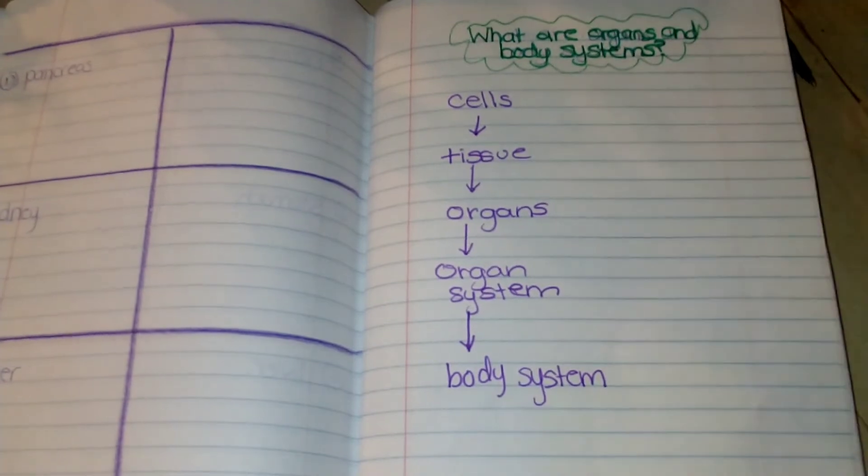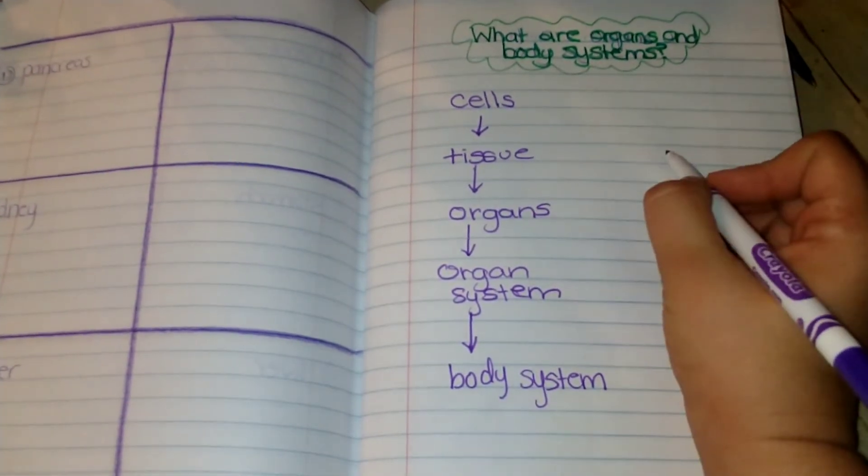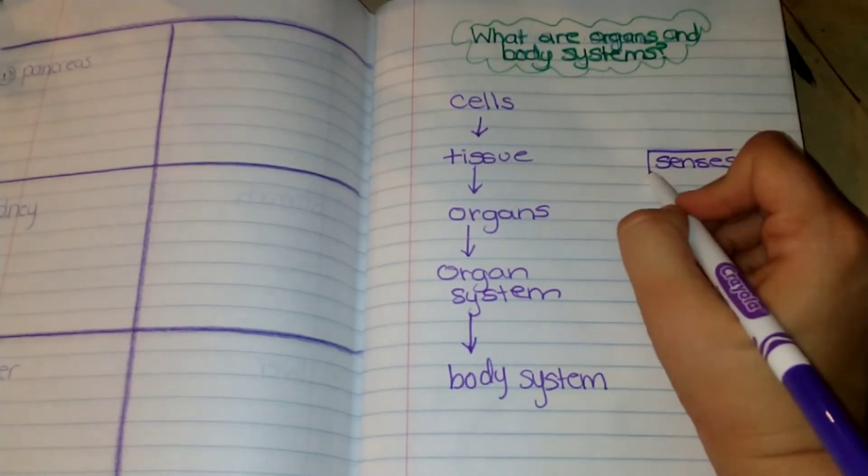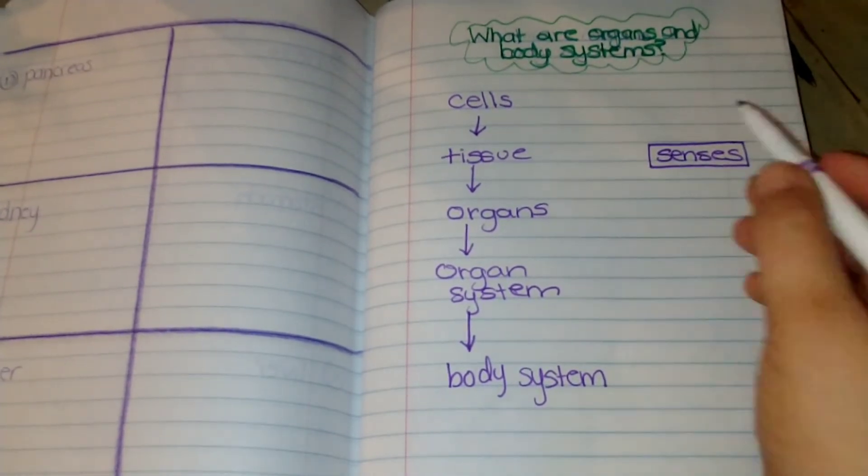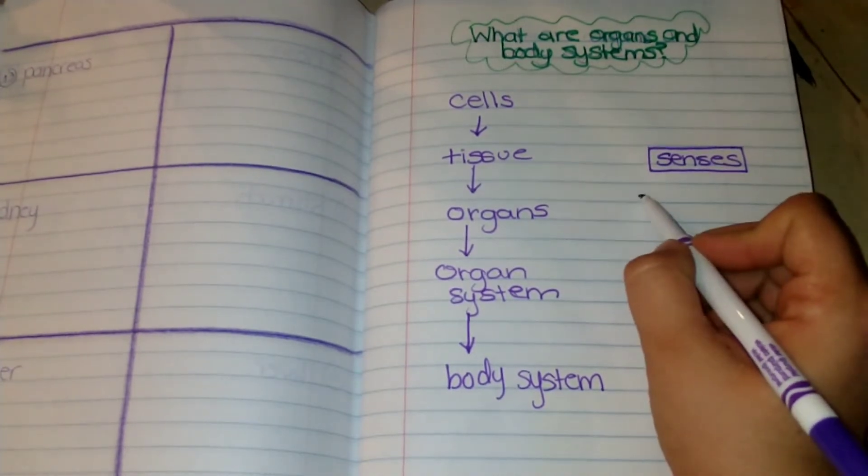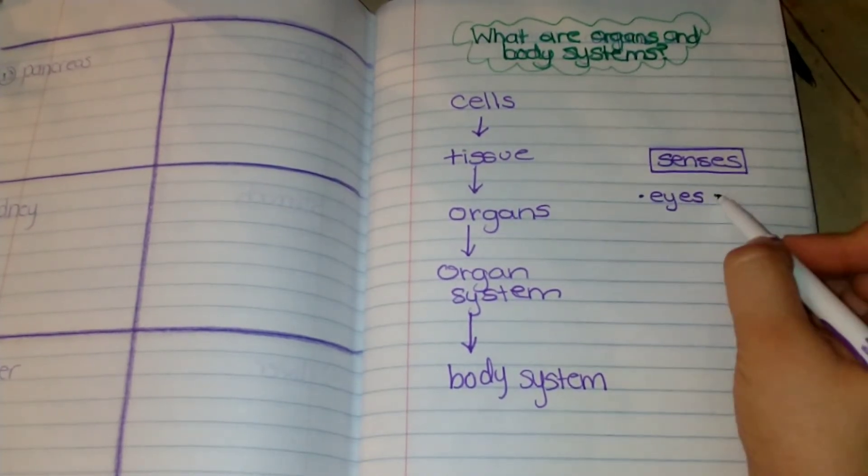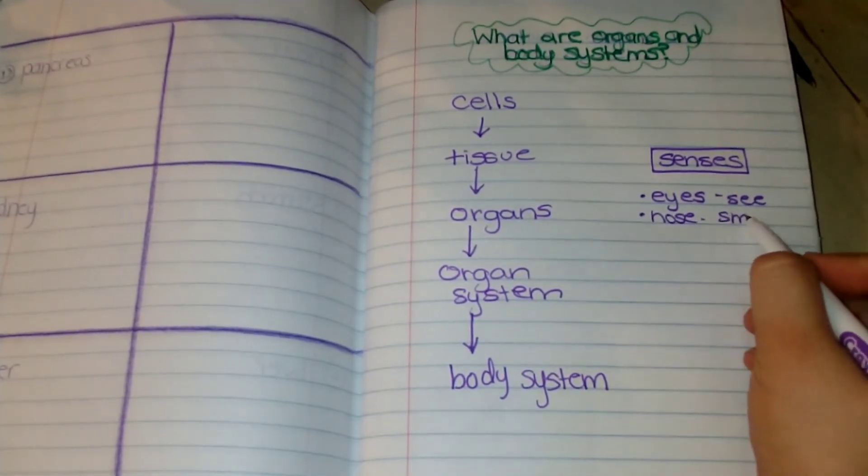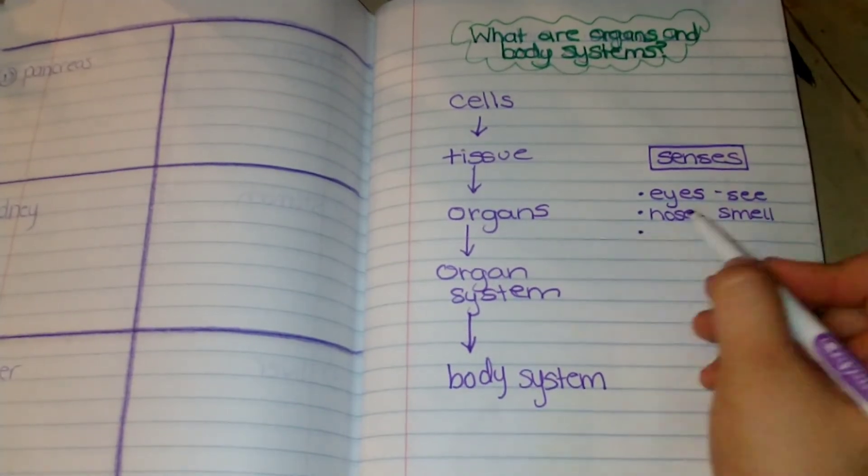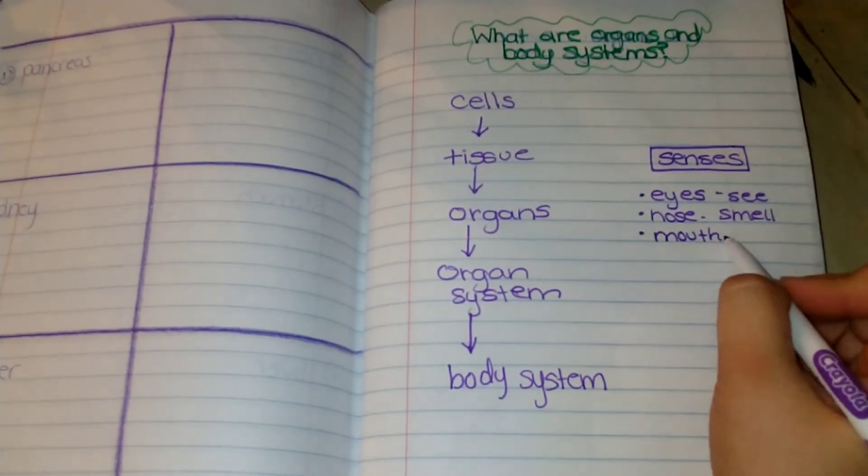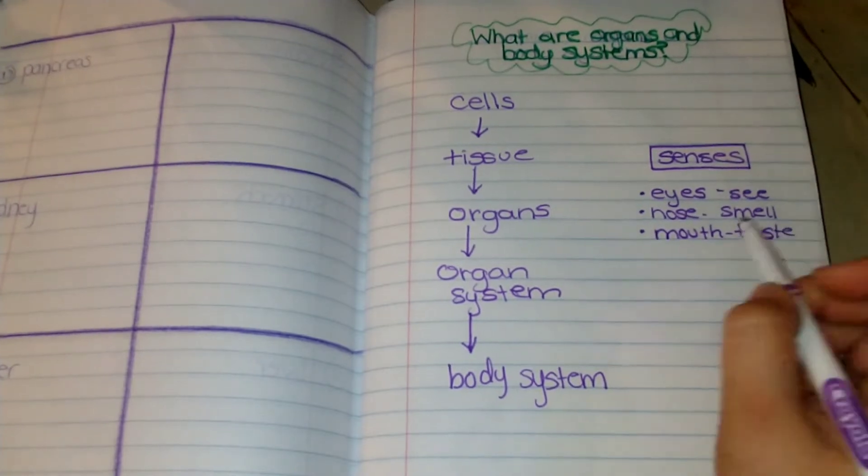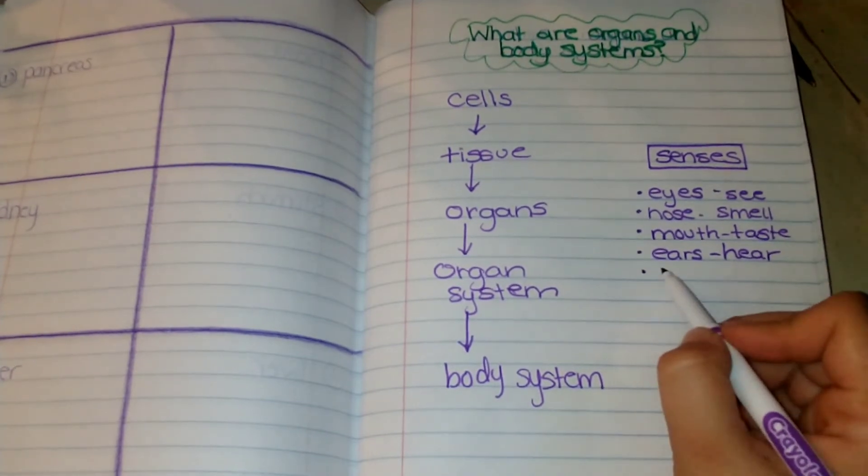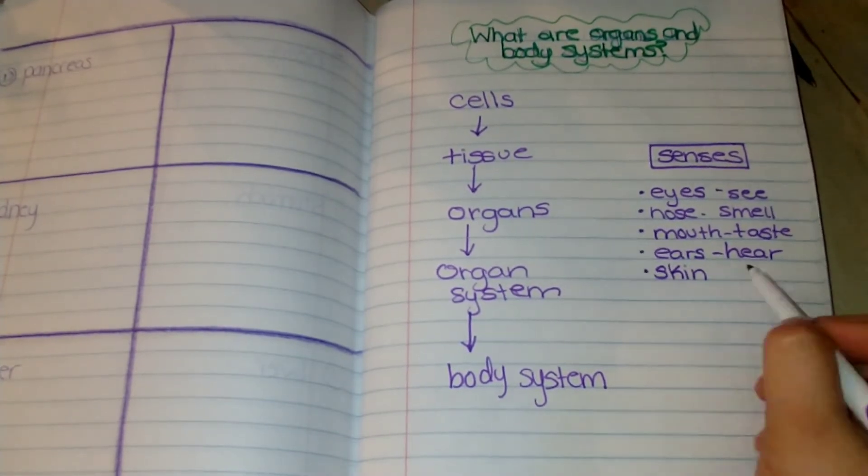Also, when we're talking about information coming into your brain, we also talk about the senses. Our senses are how we collect information from our environment around us. We can use our eyes to see, our nose to smell, our mouth to taste, our ears to hear, and our skin to touch.